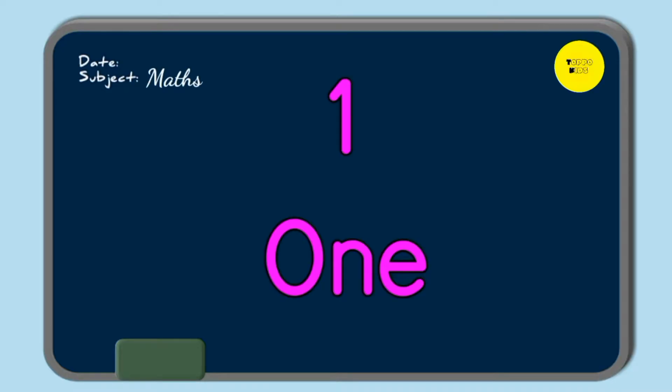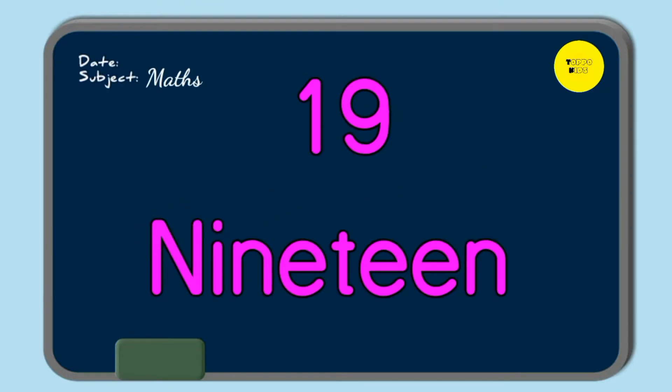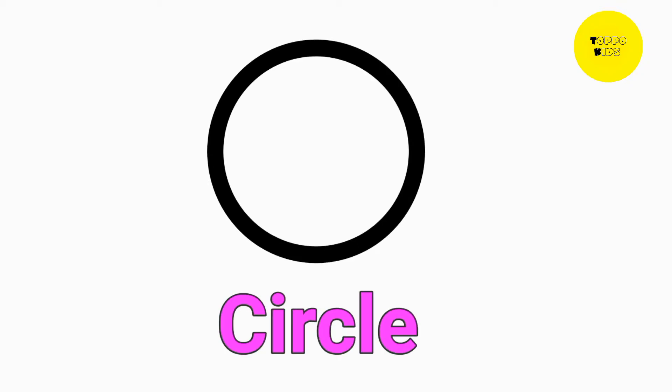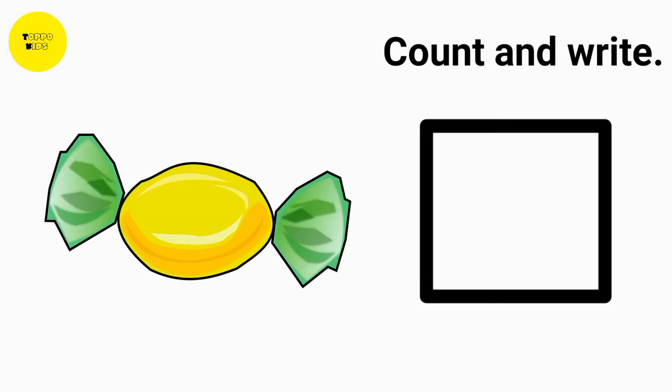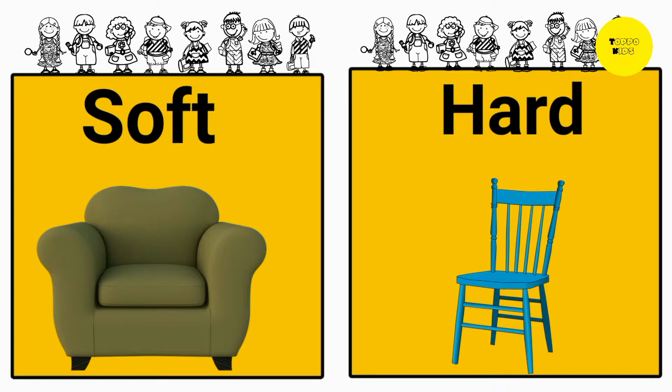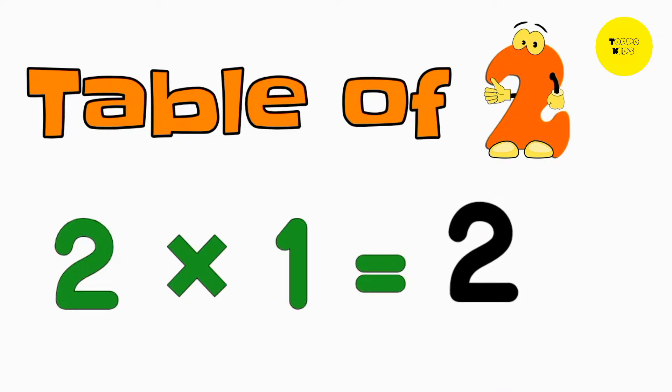We will learn counting 1 to 100, backward counting 20 to 1, different kinds of shapes, before, between and after concept, and how to count the objects. Compare the things, and tables of 1 and 2.